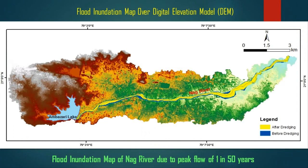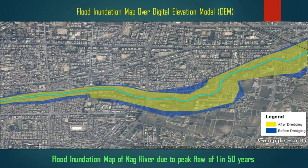A flood inundation map is used to identify the areas which will be submerged during floods of a 1-in-50-year rainfall period. As shown on the screen, the area before dredging is shown in blue and the area after dredging, which has been reduced, is shown in yellow.